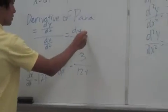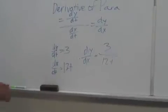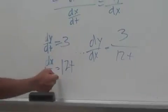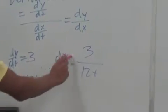And that gives you dy dx. So, we're gonna use this function as an example. You derive it. Dy dt is 3, dx dt is 12t, so dy dx is 3 over 12t. That's pretty simple.